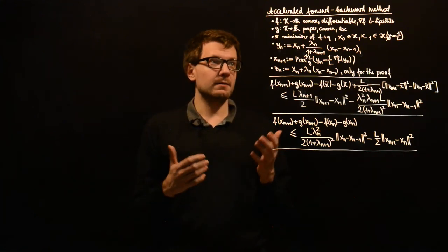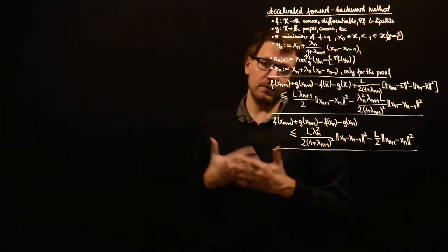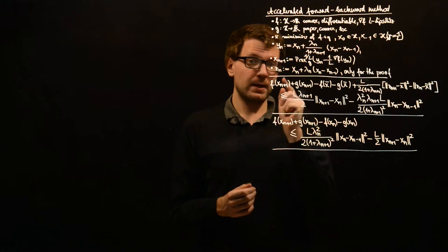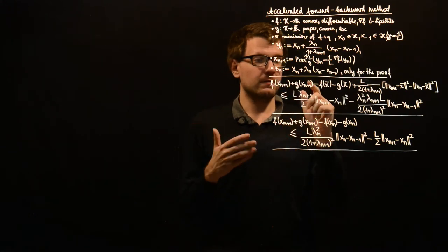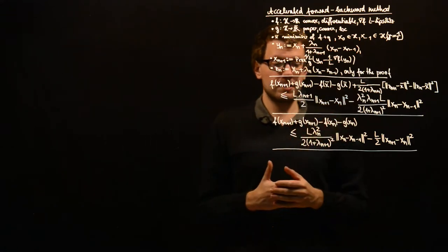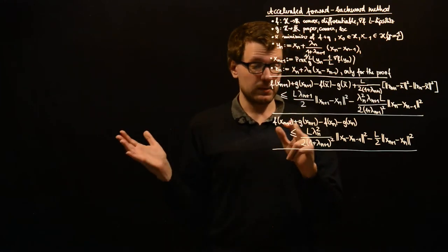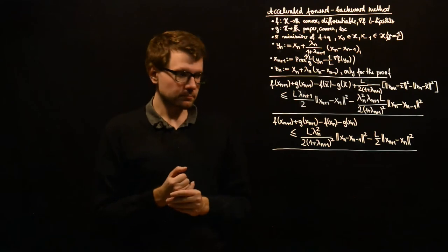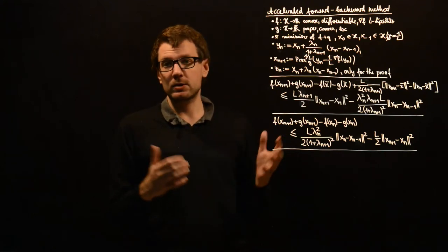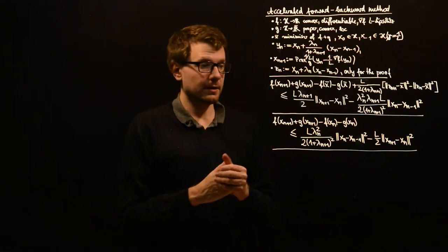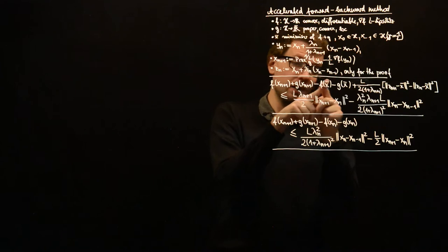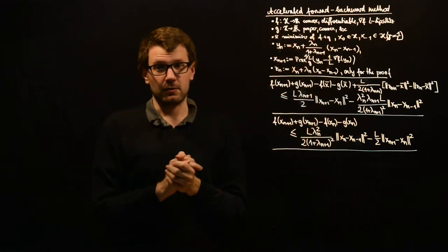In our analysis so far of the accelerated forward-backward method, we got two estimations: one between the function value of f plus g at x_{n+1} and one for the function value of the same function at the minimizer x̄. The other estimation is between the function value at x_{n+1} and at x_n. We now want to optimally combine those two estimations to get the desired convergence rate of the function value gap between the function value at an iteration point minus the function value at the minimizer.